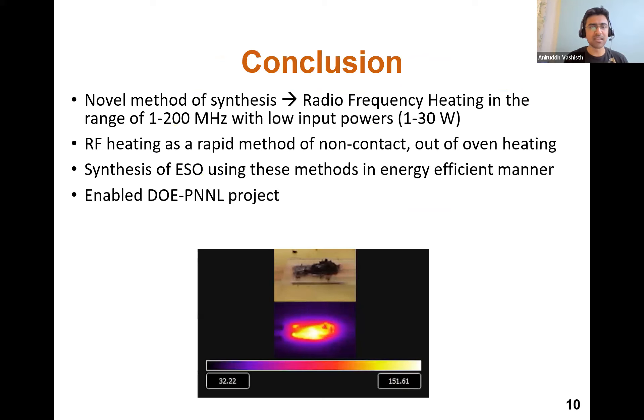And we showed that RF heating can be used to synthesize these materials rapidly. It's a very energy-efficient method to synthesize this interesting class of materials. And fortunately, we have been awarded a DOE-PNNL project, where we will be exploring processing-structure-property relationships of these materials. Because the big question now is that if we are able to synthesize these materials in a matter of minutes, as compared to hours, what gives? Is there something happening at the molecular scale that is changing if you are synthesizing these materials really rapidly?